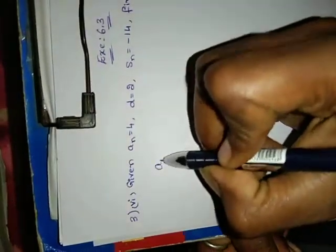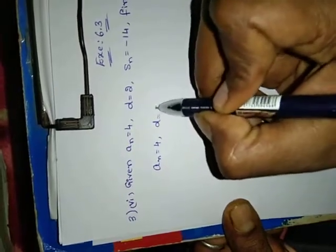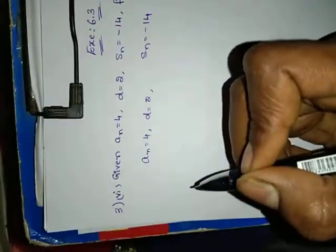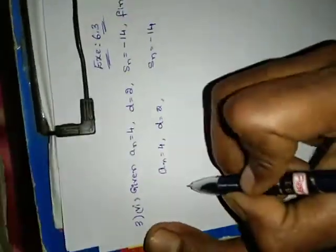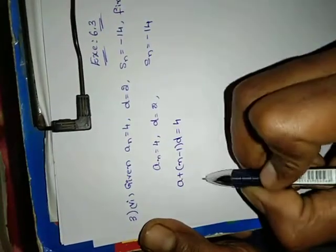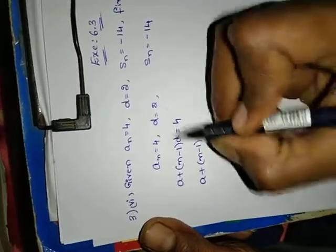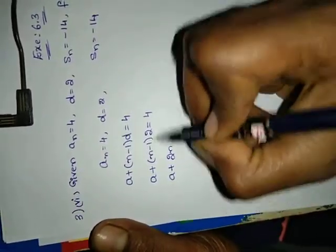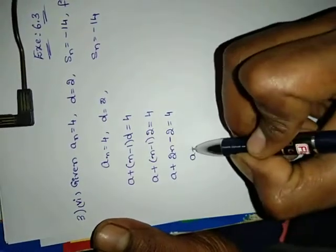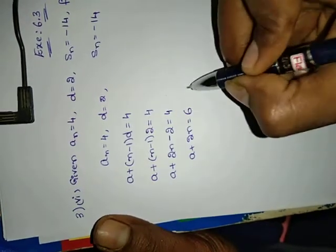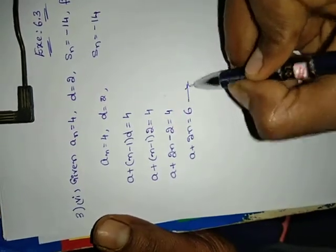What they have given: AN equals to 4, D equals to 2, and SN equals to minus 14. We know the AN formula: A plus N minus 1 into D equals to 4. D value is 2, so A plus 2N minus 2 equals to 4. Therefore A plus 2N equals to 6. Let this be equation 1.